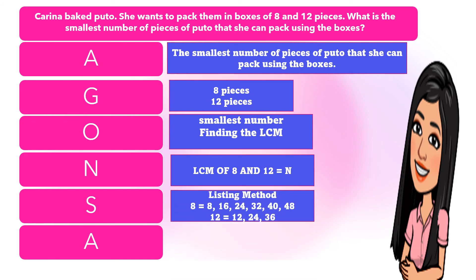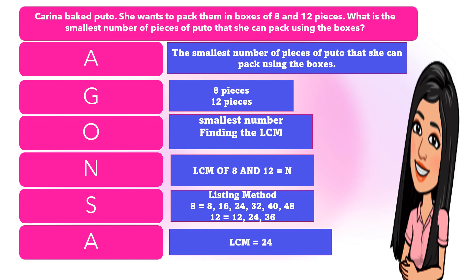For the solution, I will use the listing method. List until you find the common multiple they share. For 8: 8, 16, 24, 32, 40, 48. For 12: 12, 24, 36. Since I found a common multiple, I stop there. So 24 is the LCM of 8 and 12. The smallest number of pieces of puto that she can pack using the boxes is 24. That is the process for solving a word problem.